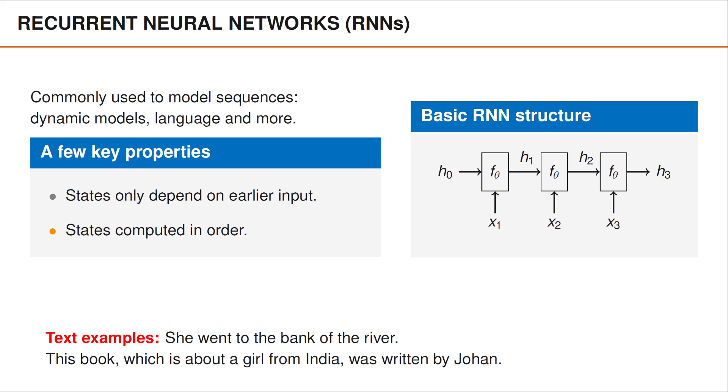The fact that information is processed sequentially may actually also slow down training, since calculations cannot be parallelized. As you have seen, at least the encoder in the transformer does not have the same sequential structure as an RNN and therefore avoids these potential drawbacks.